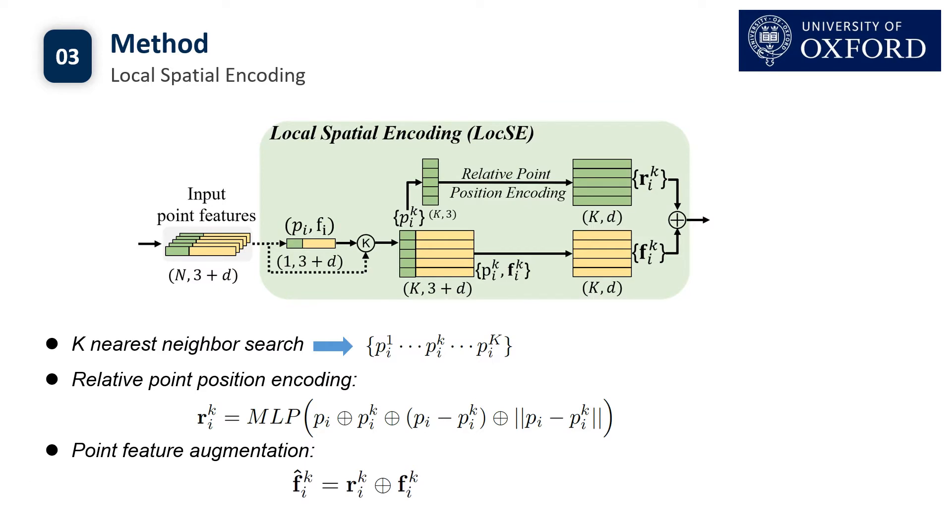Given a point cloud together with per-point features, the local spatial encoding unit first finds the neighboring points by using KNN neighbor. Then we explicitly encode the relative point position of all neighboring points. Finally, the encoded relative point position features are augmented with the original point features.